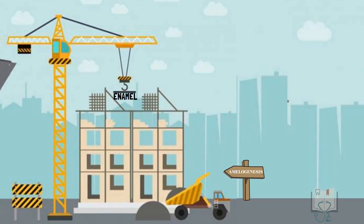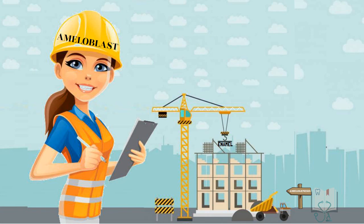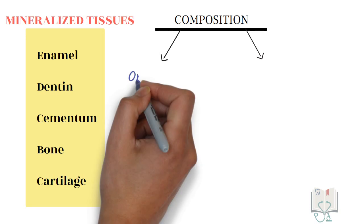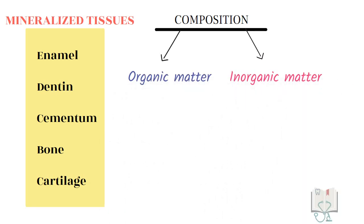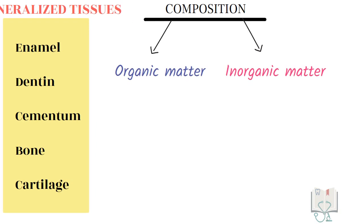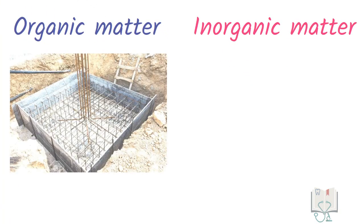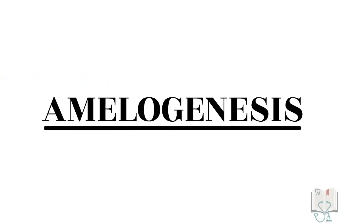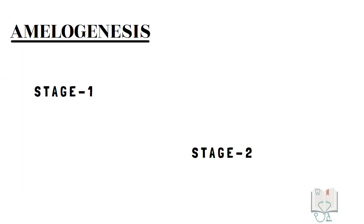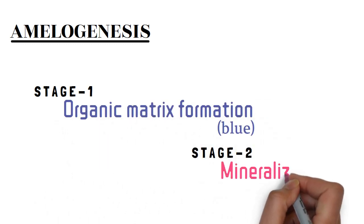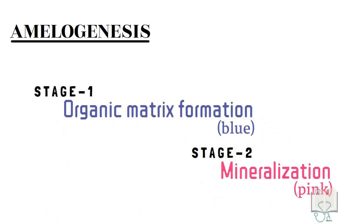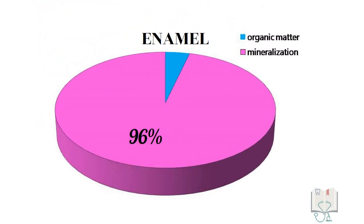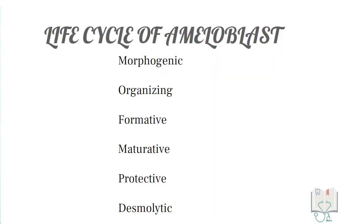Amelogenesis is the formation of enamel, and enamel is formed by ameloblasts. In our body, all types of mineralized tissues have two components: organic matter and mineralized inorganic matter. The organic matter is always deposited first, forming a basic structure on which mineralization occurs. Amelogenesis also takes place in two stages: first, organic matrix formation, and then mineralization of that organic matrix. The fully formed enamel is 96 percent mineralized and has only 4 percent organic matter.